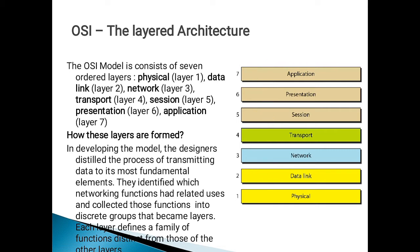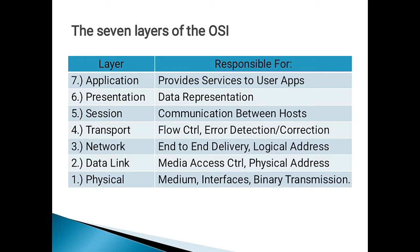Interesting is how these layers are formed, named, and created. While developing the model, the designers distilled the process of transmitting data to its most fundamental elements. They then identified which networking functions had related uses and collected those functions into discrete groups — and these discrete groups are called layers. Each layer defines a family of functions distinct from those of the others.